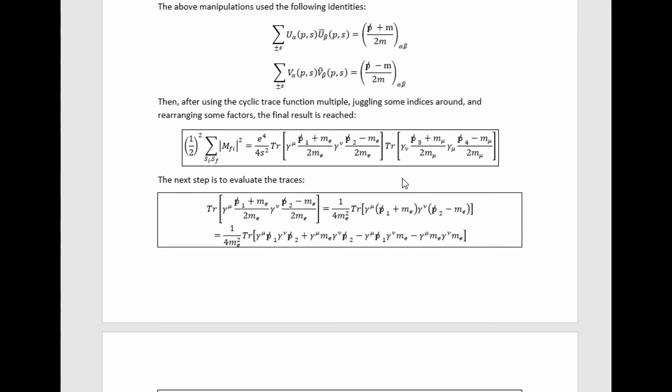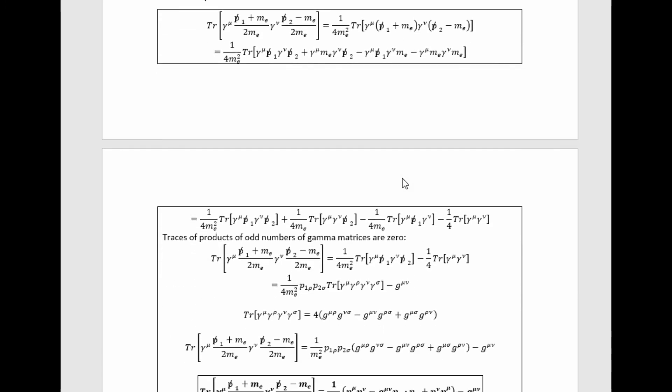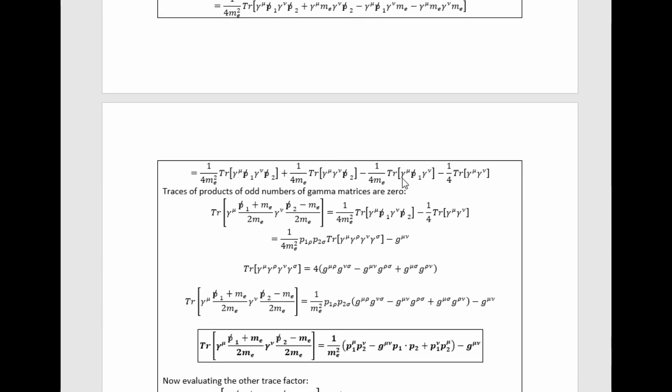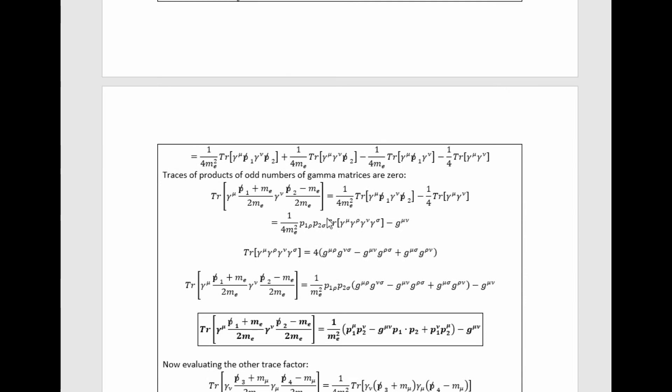Then all we need to do is actually evaluate these traces with gamma matrix identities. It's kind of long winded and it looks really complicated but it really is just algebra and application of gamma matrix identities which I give here, all the required ones.